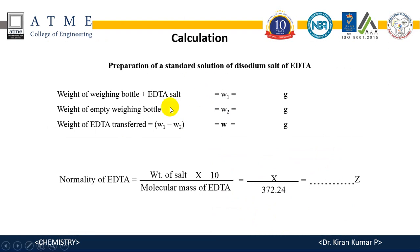Here you have the first part of the calculation to prepare the standard solution of EDTA. You take a known weight of EDTA salt which is transferred into the standard flask and make up the solution. The weight of weighing bottle plus EDTA is W1 grams. Weight of empty weighing bottle is W2 grams. W1 minus W2 gives the weight of EDTA transferred into the standard flask.